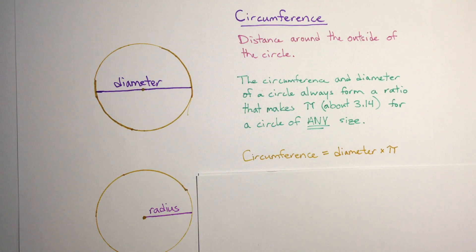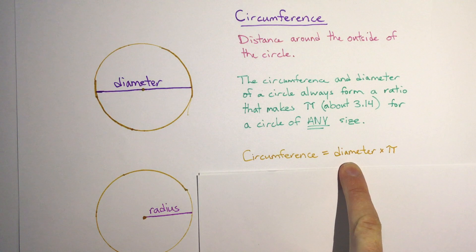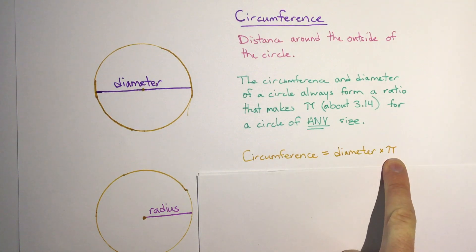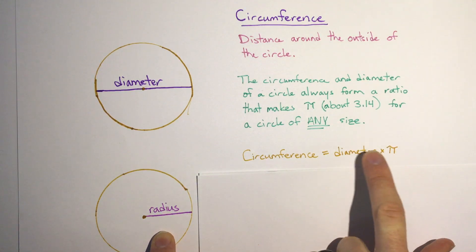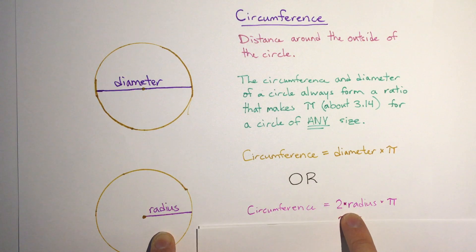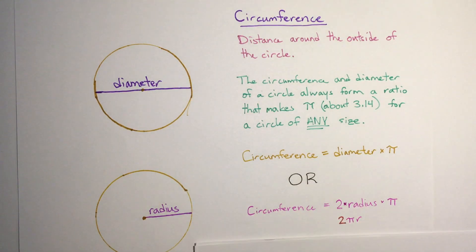Because of that ratio, that allows us to use pi to find the circumference. The circumference equals diameter times pi. Or if we don't have the diameter, maybe we have the radius - remember the radius is just half the diameter, so we could also do 2 times the radius times pi, or as you may see it written, 2πr.